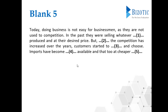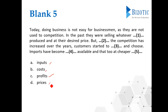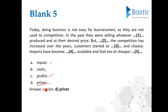The last blank for this paragraph: 'Imports have become easily available and that too at cheaper dash.' The options are: cheaper inputs, cheaper cost, cheaper profits, cheaper prices. Here they're talking about money — the imports are easily available and they're getting them at a very cheap rate. So the answer is 'prices' — at cheaper prices. That is option D.